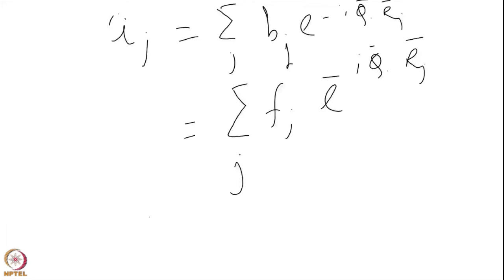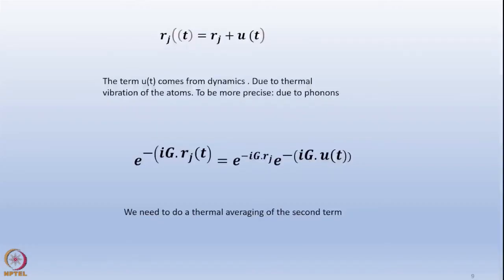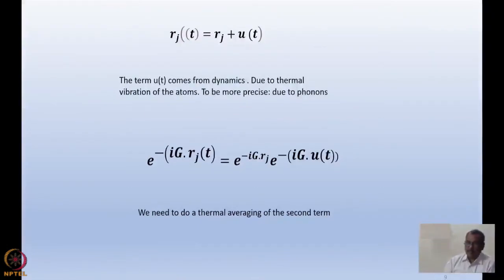Actually, for Bragg diffraction Q becomes equal to G. This fj is the Fourier transform over the charge cloud. This Rj was at 0 degree Kelvin what I wrote. Now at a temperature T, the position at temperature T will be the position at 0 Kelvin plus an oscillation around it at time t. This uj(t) comes from dynamics, from thermal vibration atoms, and to be more precise, it is coming from the phonon vibrations.